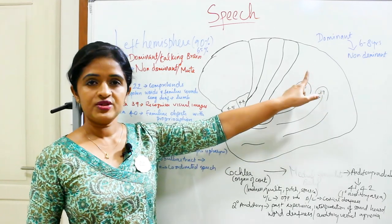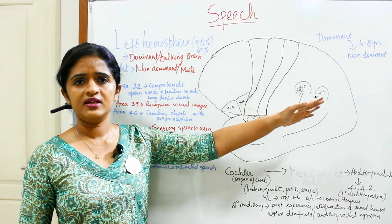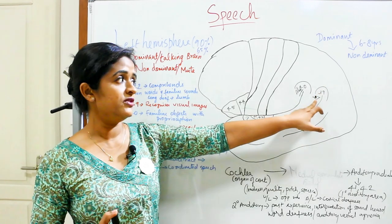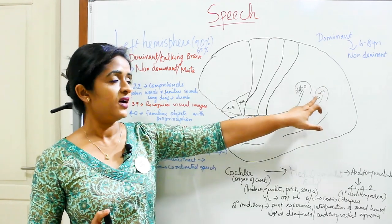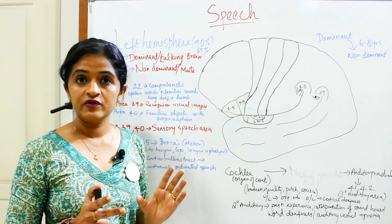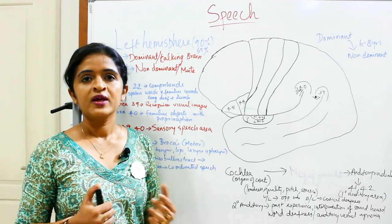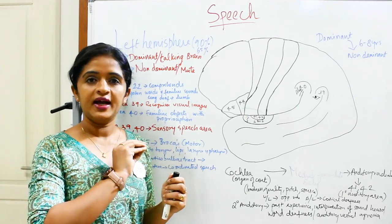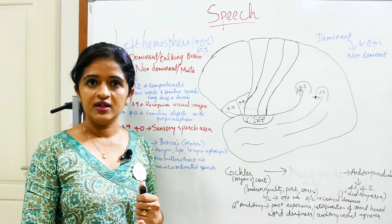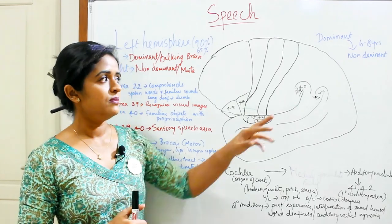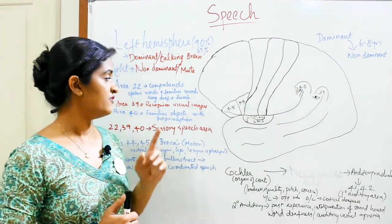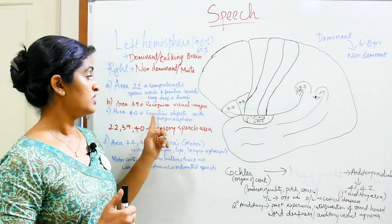Area number 39, which is in the parietal lobe — the angular gyrus — is responsible for recognizing visual images. For example, if you are seeing handwriting you are able to read it. That understanding with the help of visual images is made possible with area 39.